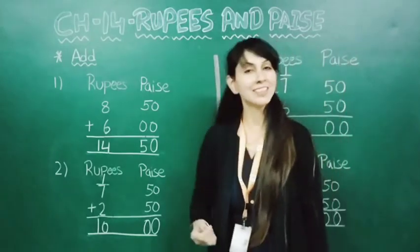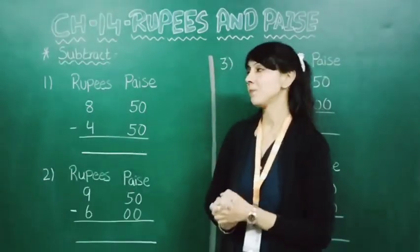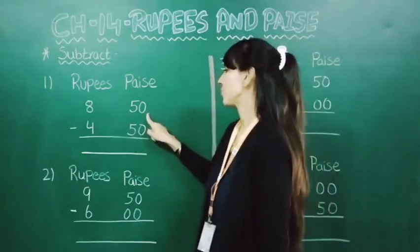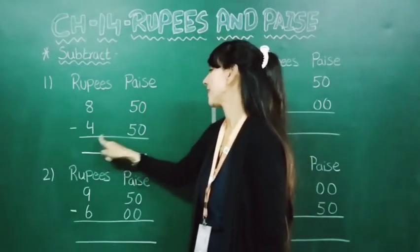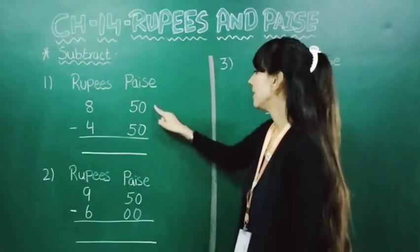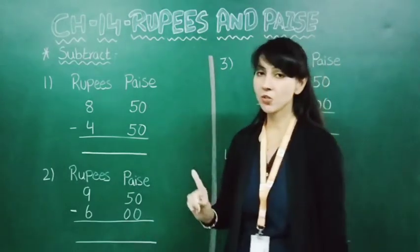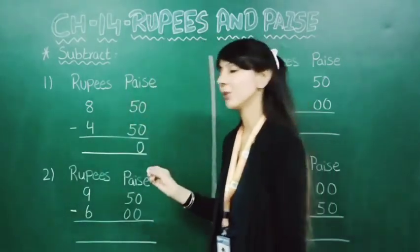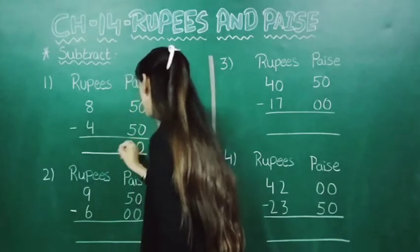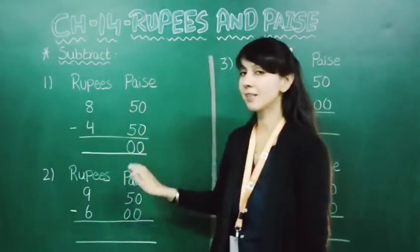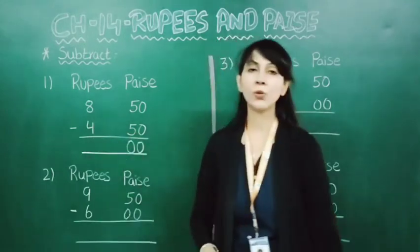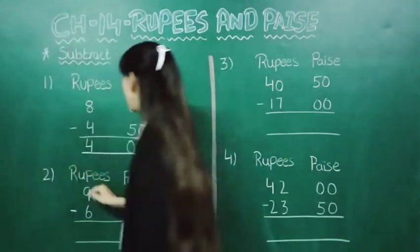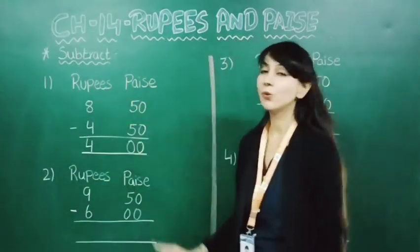Understood how to do this addition? Now students let's see subtraction of rupees and paise. Now let's do it: 8 rupees 50 paise minus 4 rupees 50 paise. Here you can see there are 2 zeros, so here it will come 0. Now 5 minus 5 is 0, so here also it will come 0. Now 8 minus 4 — you will get 4 only. So the answer is 4 rupees.